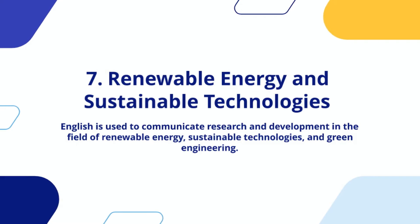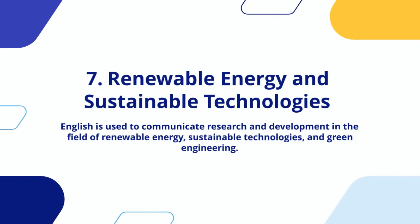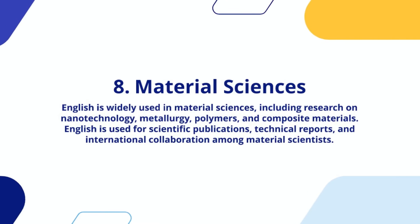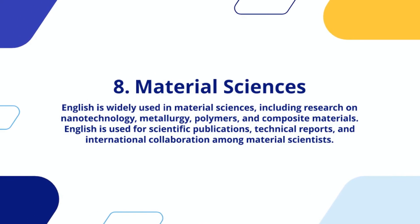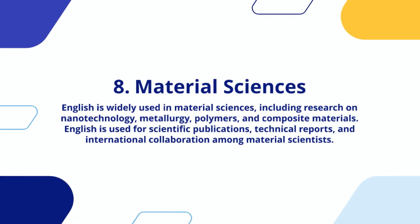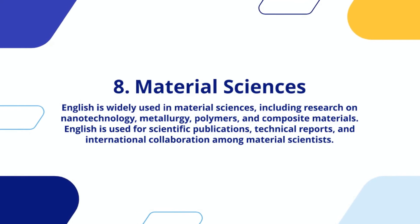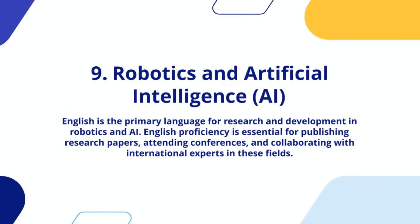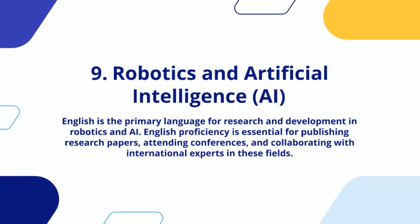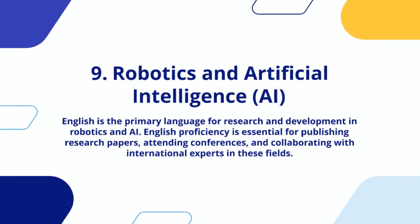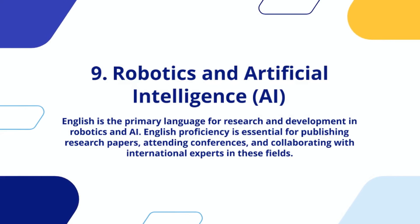Seventh, Renewable Energy and Sustainable Technologies: English is used to communicate research and development in the fields of renewable energy, sustainable technologies, and green engineering. Eighth, Material Sciences: English is widely used in material sciences, including research on nanotechnology, metallurgy, polymers, and composite materials. English is used for scientific publications, technical reports, and international collaboration among material scientists. Ninth, Robotics and Artificial Intelligence: English is essential for publishing research papers, attending conferences, and collaborating with international experts in these fields.